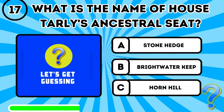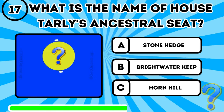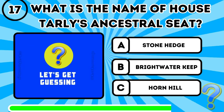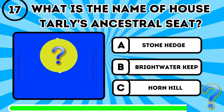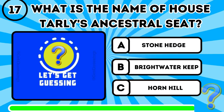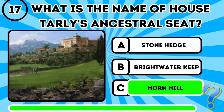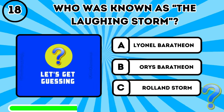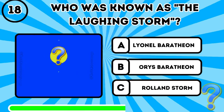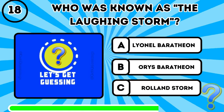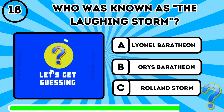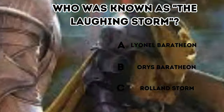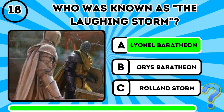Question 17: What is the name of House Tarly's ancestral seat? It's C, Horn Hill. Question 18: Who was known as The Laughing Storm? It's A, Lionel Baratheon.